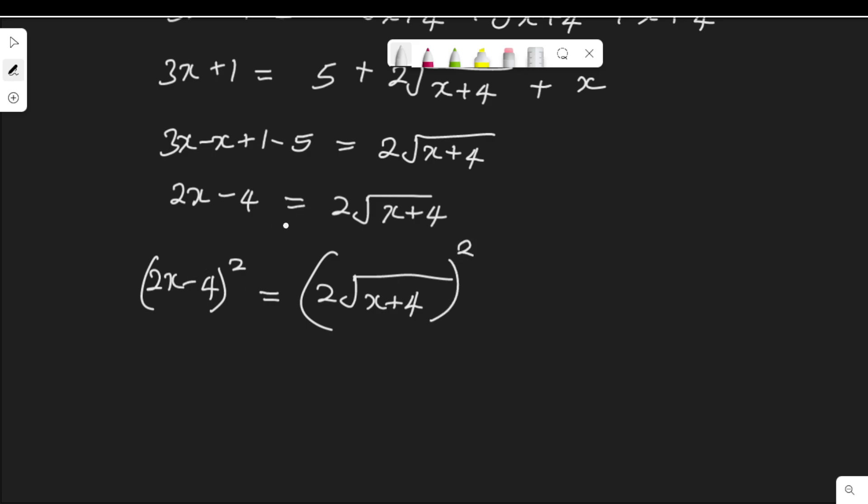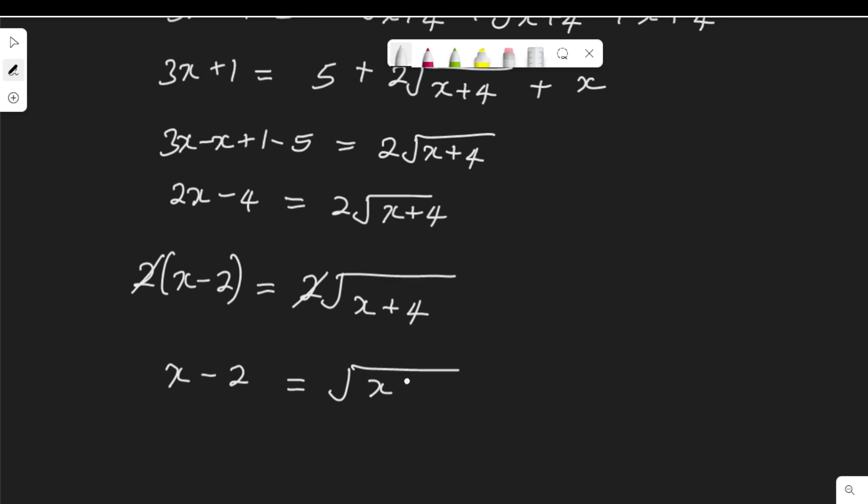Or, to make our work easier, I think I need to factor out something there. Here on the left-hand side, we have 2x - 4, so 2 is common to both of them. Let me factor it out. It will be 2(x - 2) = 2√(x+4). Dividing 2 by 2, these 2s will cancel. So I have x - 2 = √(x+4).